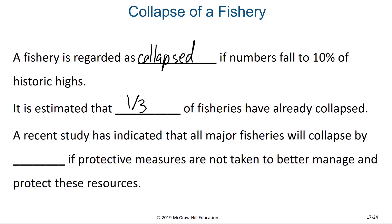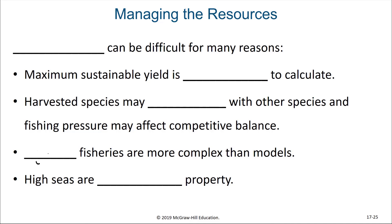A recent study has indicated that all major fisheries will collapse by 2050 if protective measures are not taken to better manage and protect these resources. Now, this isn't all bad news because some of these protective measures are working, yet it's not easy. Management can be difficult for many reasons. One reason is that the maximum sustainable yield is a difficult number to calculate.